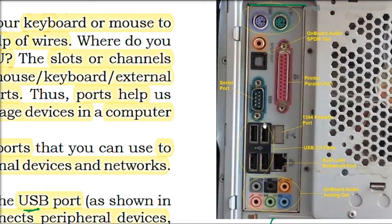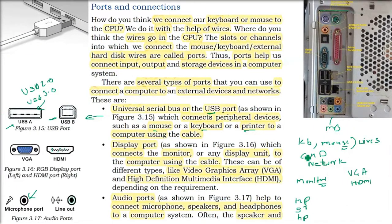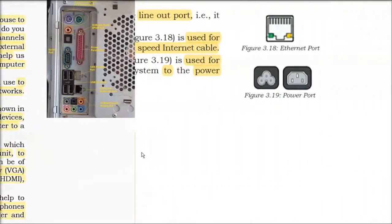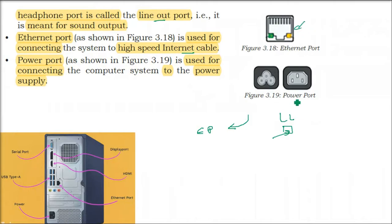Below that, there is a firewall port that is not open right now. You can see four USB ports — they could be USB 2.0 or 3.0. There is also an RJ45 local area network Ethernet port — similar to what landline phones used. And there is an onboard audio analog output, which you will also see on televisions.